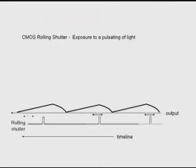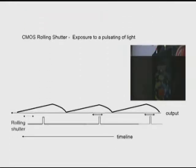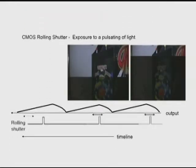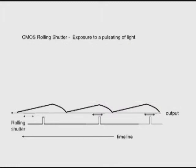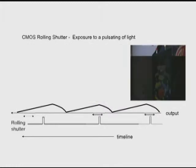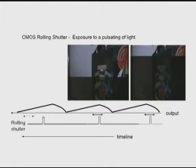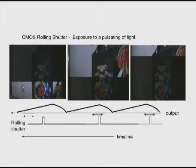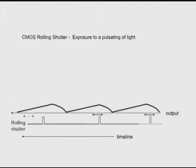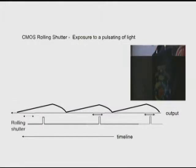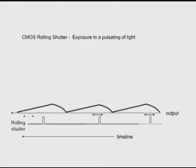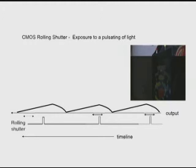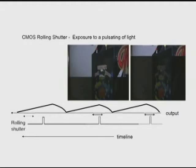You may end up with a situation like this if the shutter is set very high and it's also in a CMOS, where the upper portion, lower portion, or mid portion of the picture will be brighter than the others.